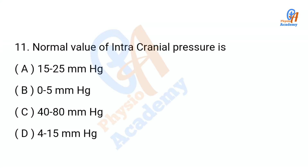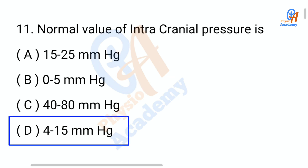Question number 11: Normal value of intracranial pressure is — option A: 50 to 25 mmHg, option B: 0 to 5 mmHg, option C: 40 to 80 mmHg, option D: 4 to 15 mmHg. The correct answer is option D: 4 to 15 mmHg.